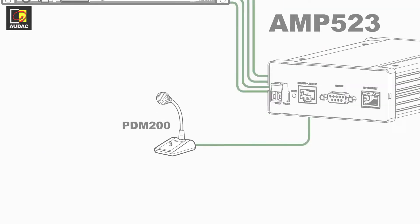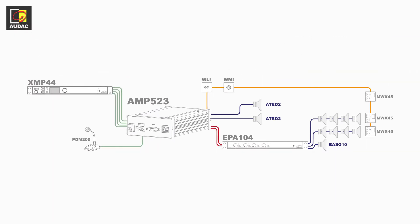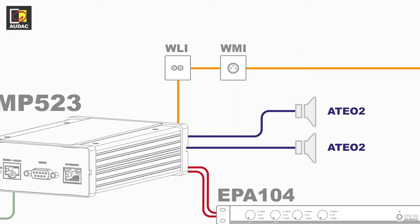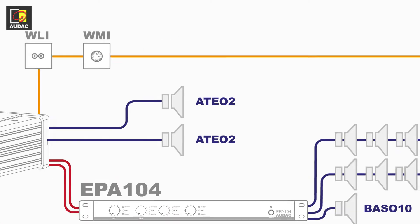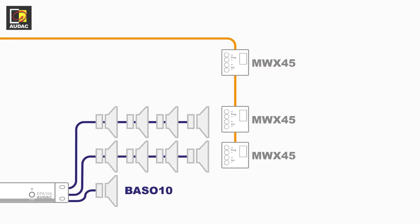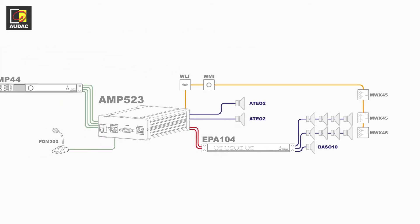The AMP523 is fitted with both wall line and mic inputs, not forgetting the MWX control panels, connected with CAT5 cabling — they can be fitted up to 300 meters from the AMP523.